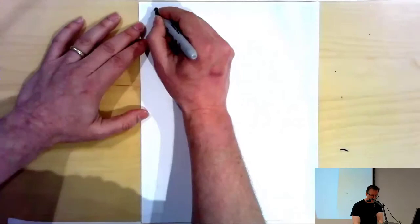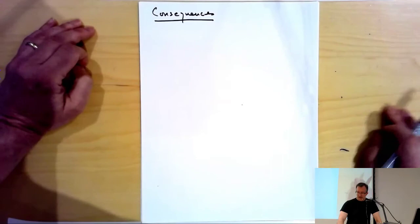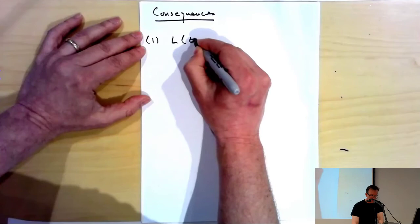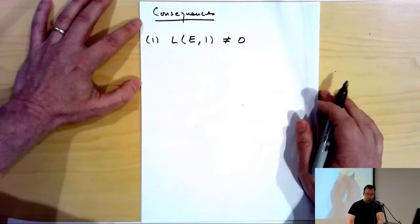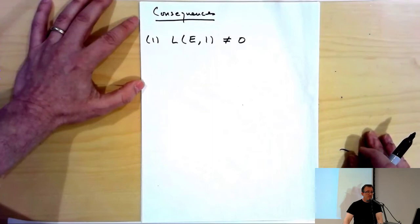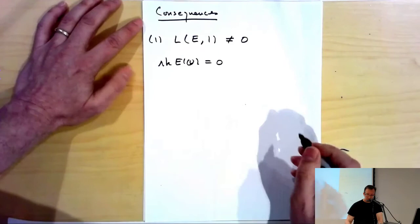Some consequences. First consequence: under the assumption that L(E,1) ≠ 0, I already noted from Kato's divisibility alone that you get another proof that the rank of the elliptic curve is zero — so you have that the rank of E(Q) is zero.